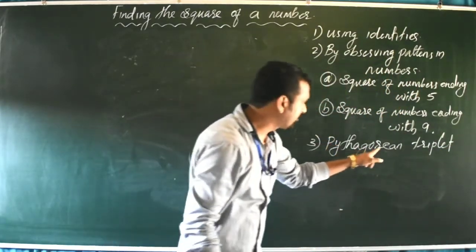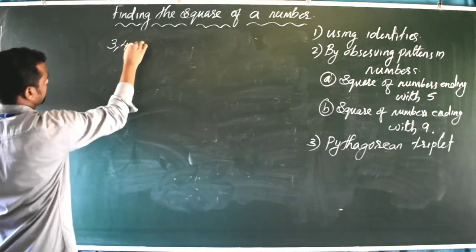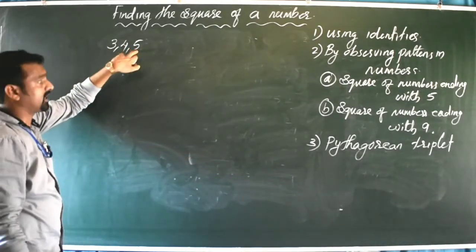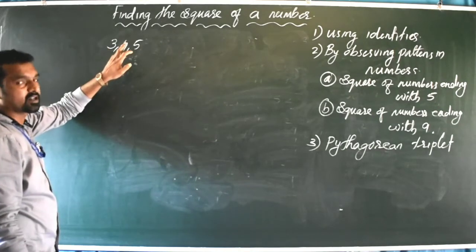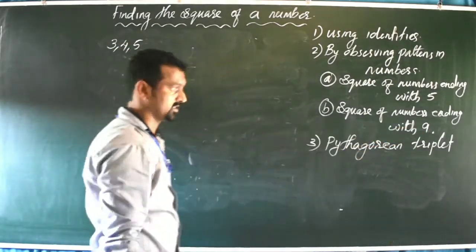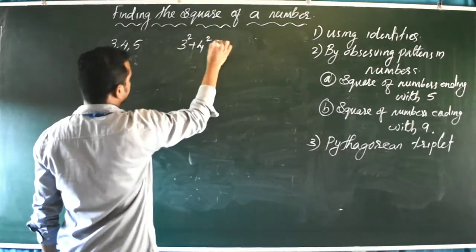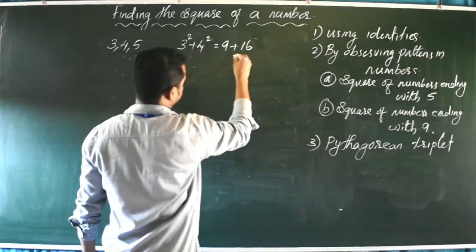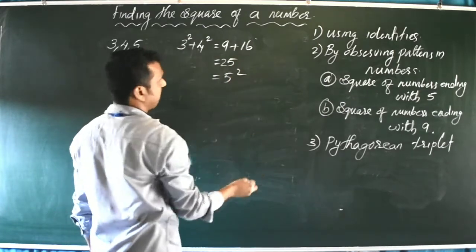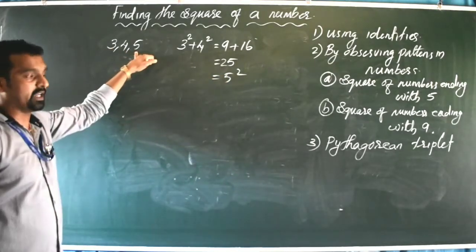Next topic is the Pythagorean triplet. Three numbers are said to be a Pythagorean triplet if the sum of the squares of the two smaller numbers is equal to the square of the third (largest) number. For example, 3, 4, 5 are Pythagorean triplets because 3² + 4² = 9 + 16 = 25 = 5².